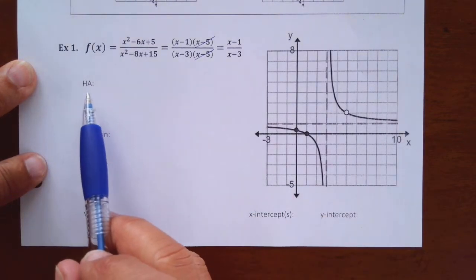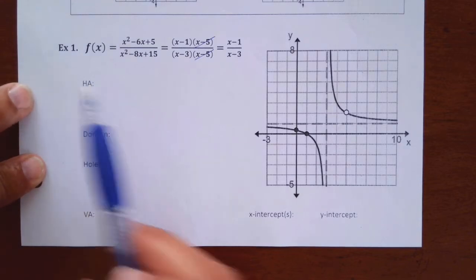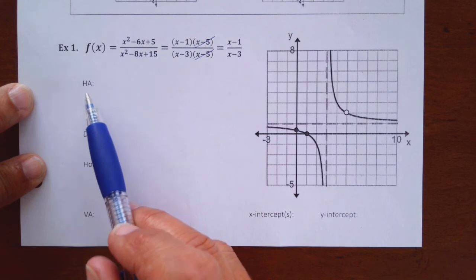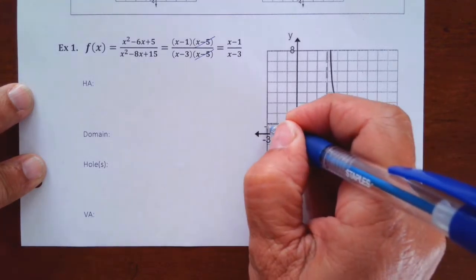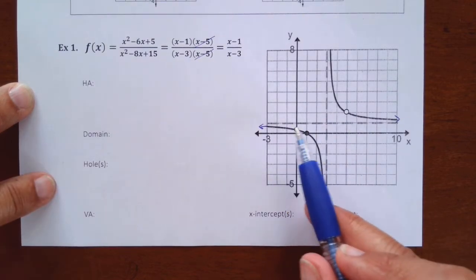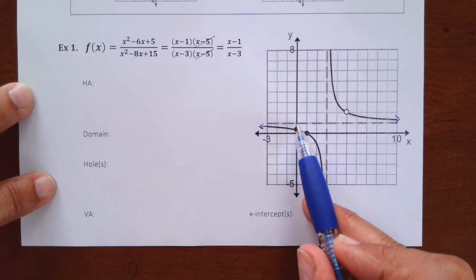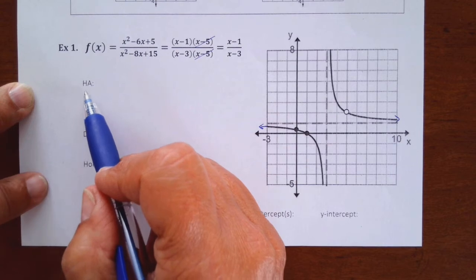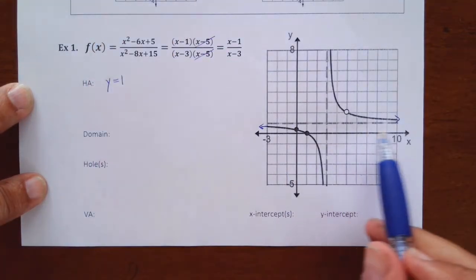Let's talk about horizontal asymptotes — that's what HA is abbreviated for. An asymptote that goes horizontal is what we call end behavior. Look at the graphs — what the ends are doing. The end behaviors are heading to a specific number, and the number they're heading to is this dotted line, which is one. So the end behavior would be y equals one — it's a horizontal line at one.